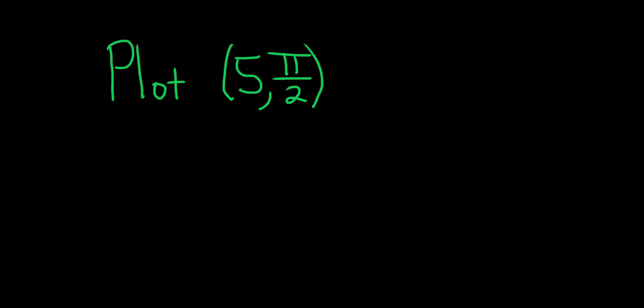In this problem, we're given some polar coordinates, 5 comma pi over 2, and we're asked to plot them and convert to rectangular coordinates. Recall that polar coordinates are of the form r comma theta.